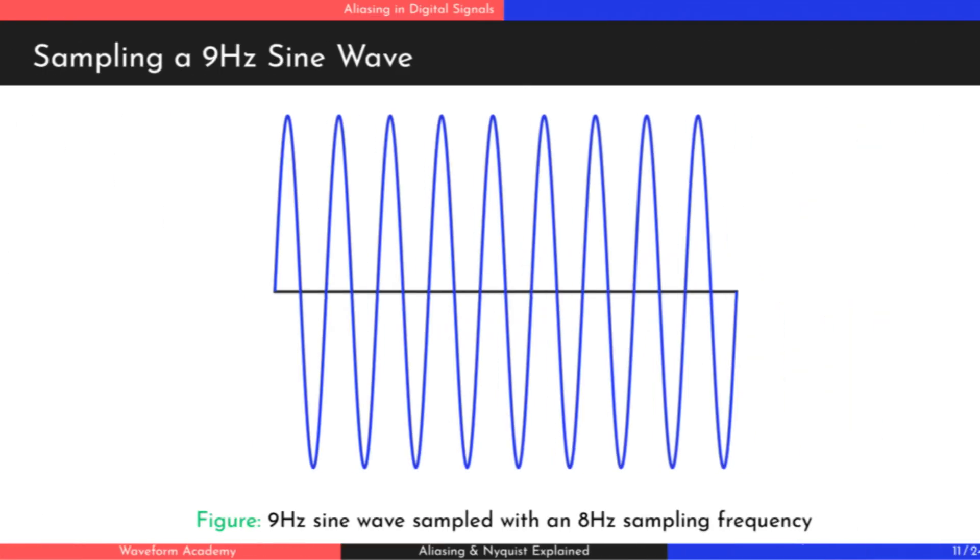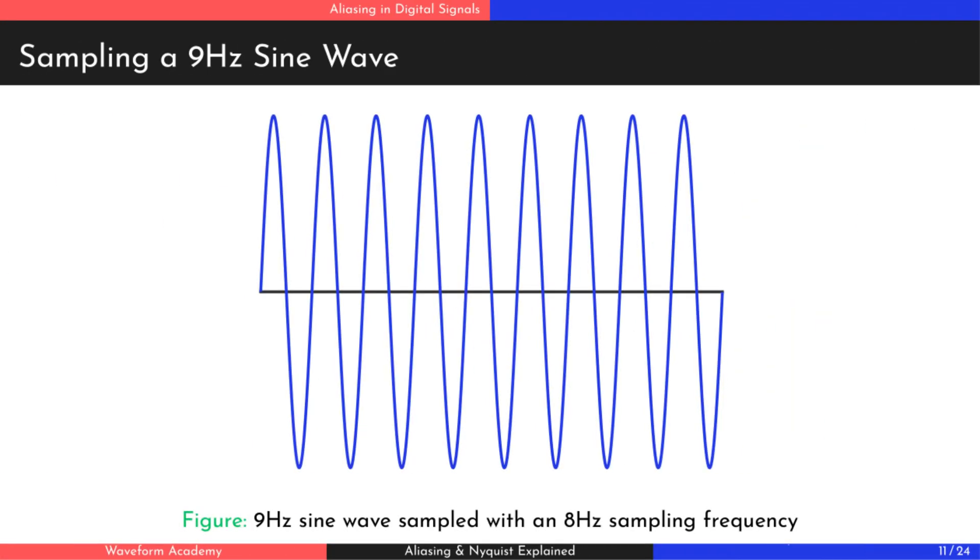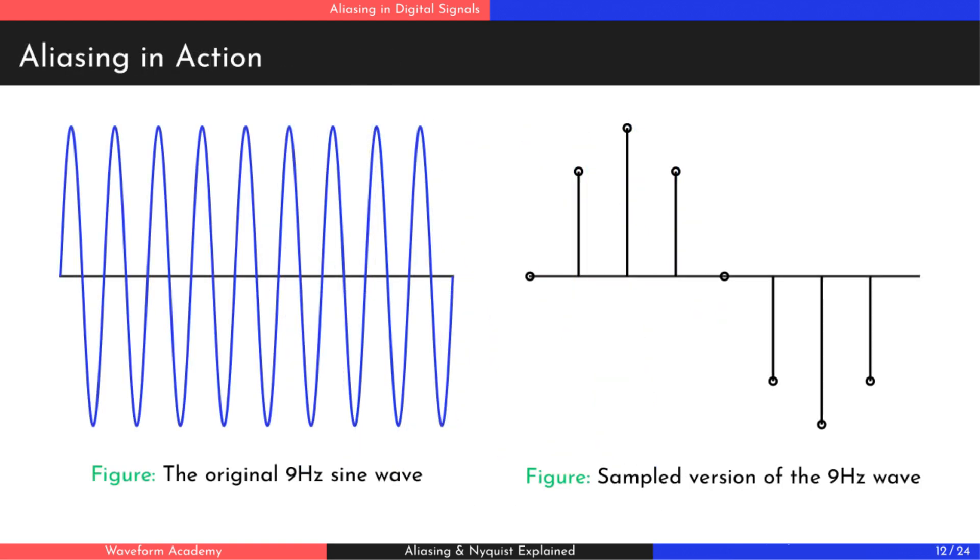Now, let's take another example. Suppose the original signal has a frequency of 9 Hz and we sample it at 8 Hz. When we attempt to reconstruct it, the lowest possible frequency that fits these samples is 1 Hz, not 9 Hz. This is aliasing.